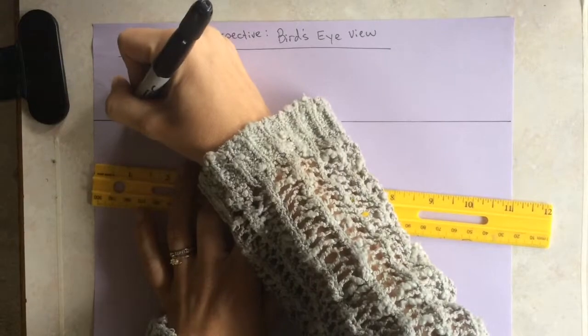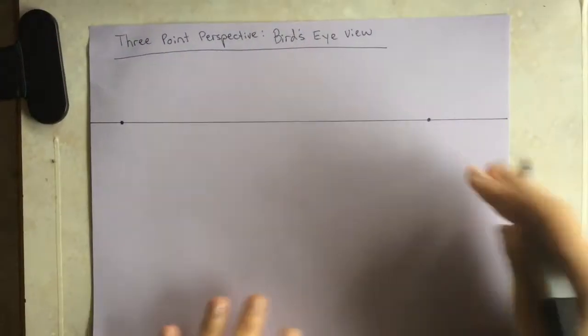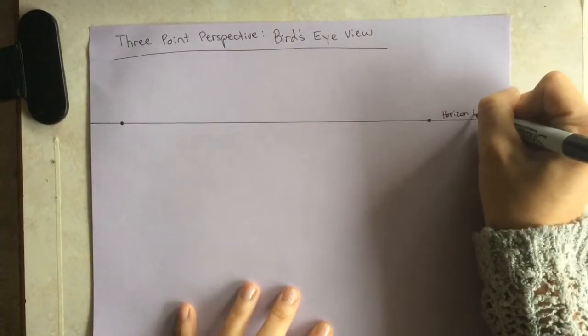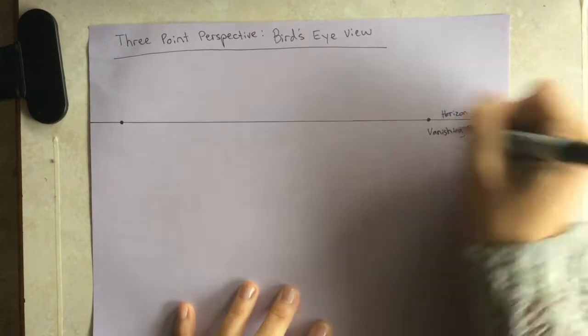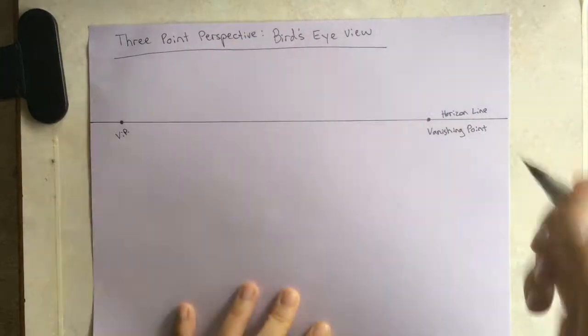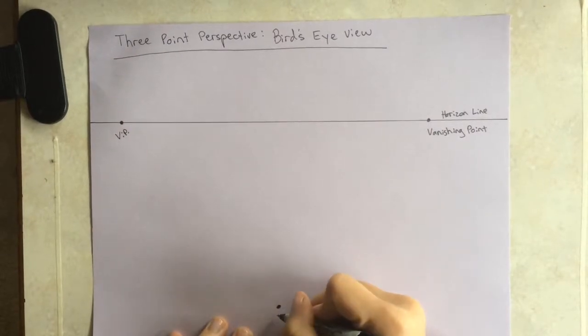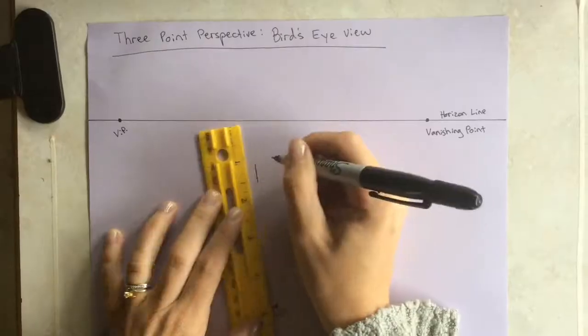You start with your horizon line and add two points on the horizon line far apart from each other, and I label it. These are called the vanishing points. You actually want to create a third one, low down on your piece of paper.